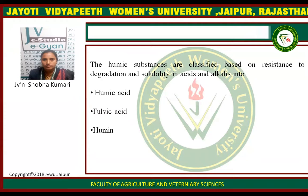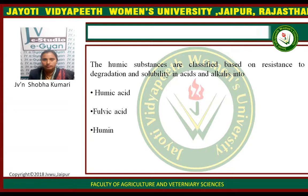Properties of humic substances. First, humic acid: the fraction of humic substances that is not soluble in water under acid conditions — specifically at pH less than 2 — but is soluble at higher pH values. Humic acids can be extracted from soil by alkaline reagents and are insoluble in dilute acid. They are the major extractable compounds of soil humic substances and are dark brown to black in color.